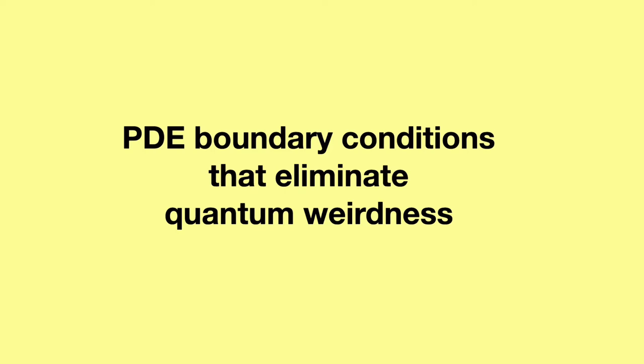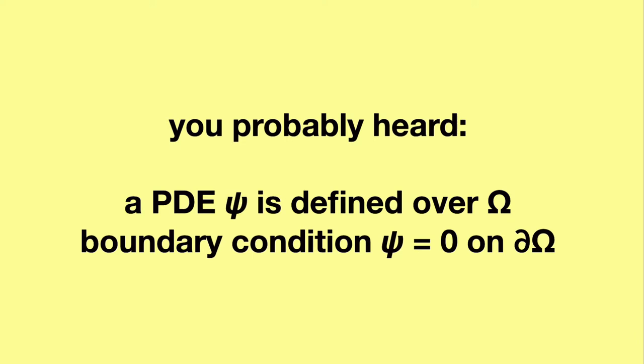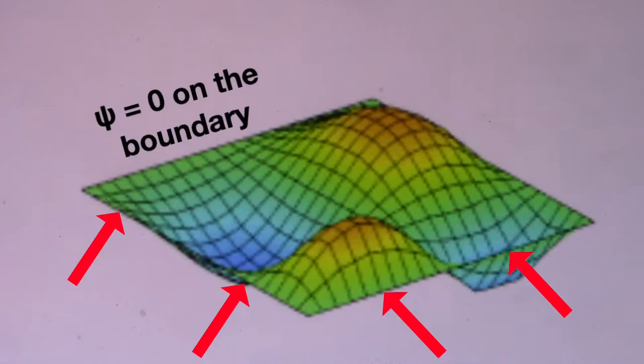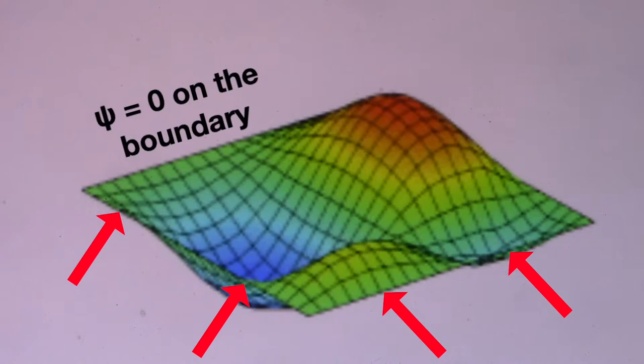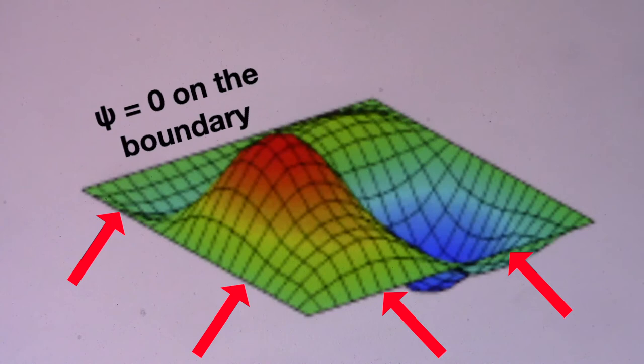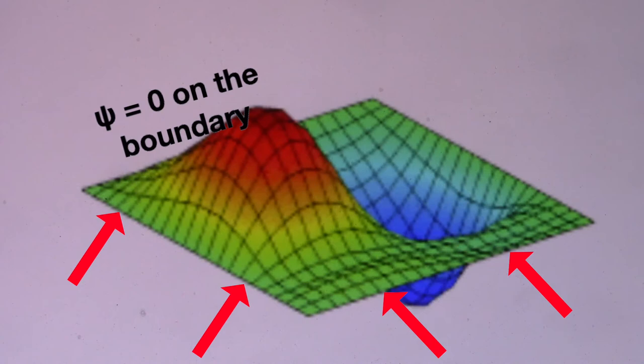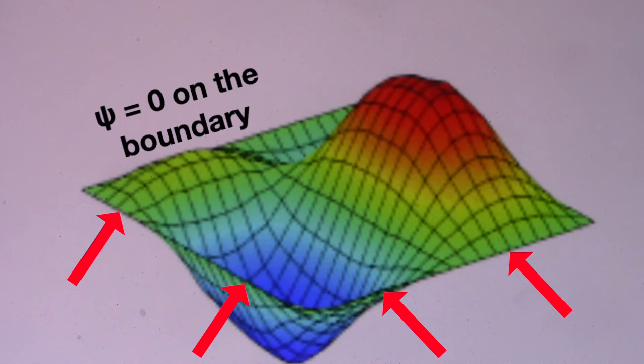PDE Boundary Conditions That Eliminate Quantum Weirdness. In this video, we will present a mathematical game focused on boundary conditions. Unlike any discussion you ever heard before, a partial differential equation psi is defined over a domain omega, and the boundary condition is that psi equals zero everywhere on that boundary, and that determines the final solution to that differential equation.